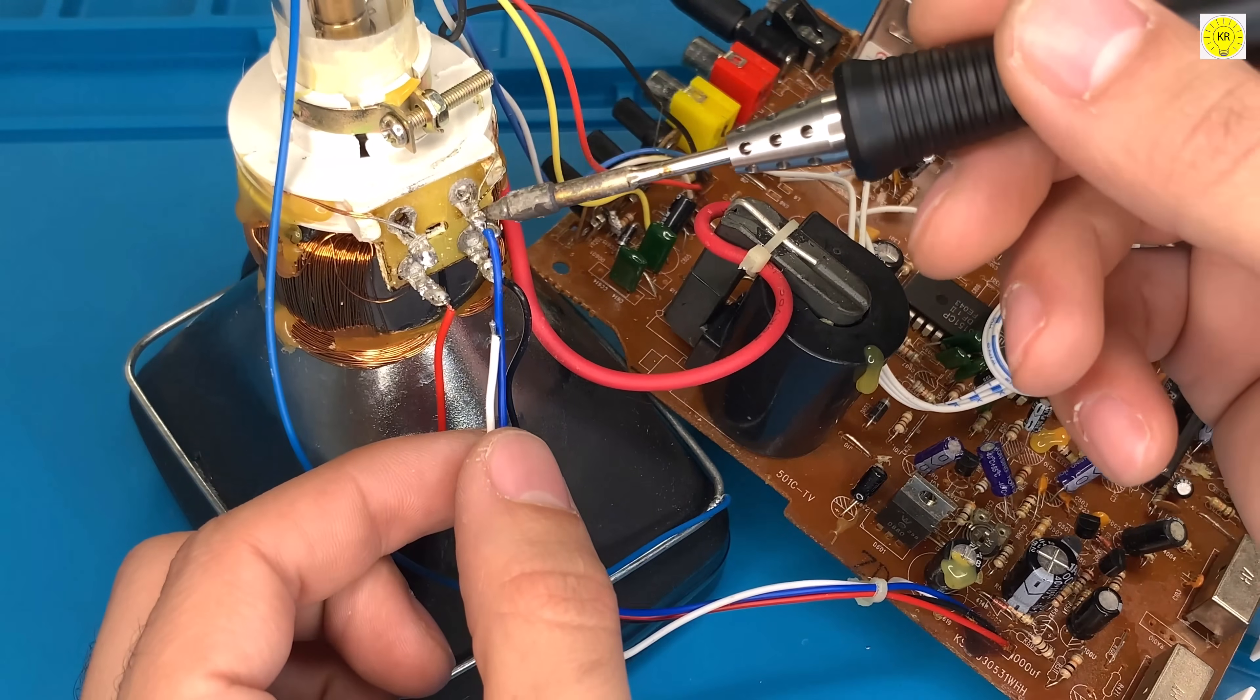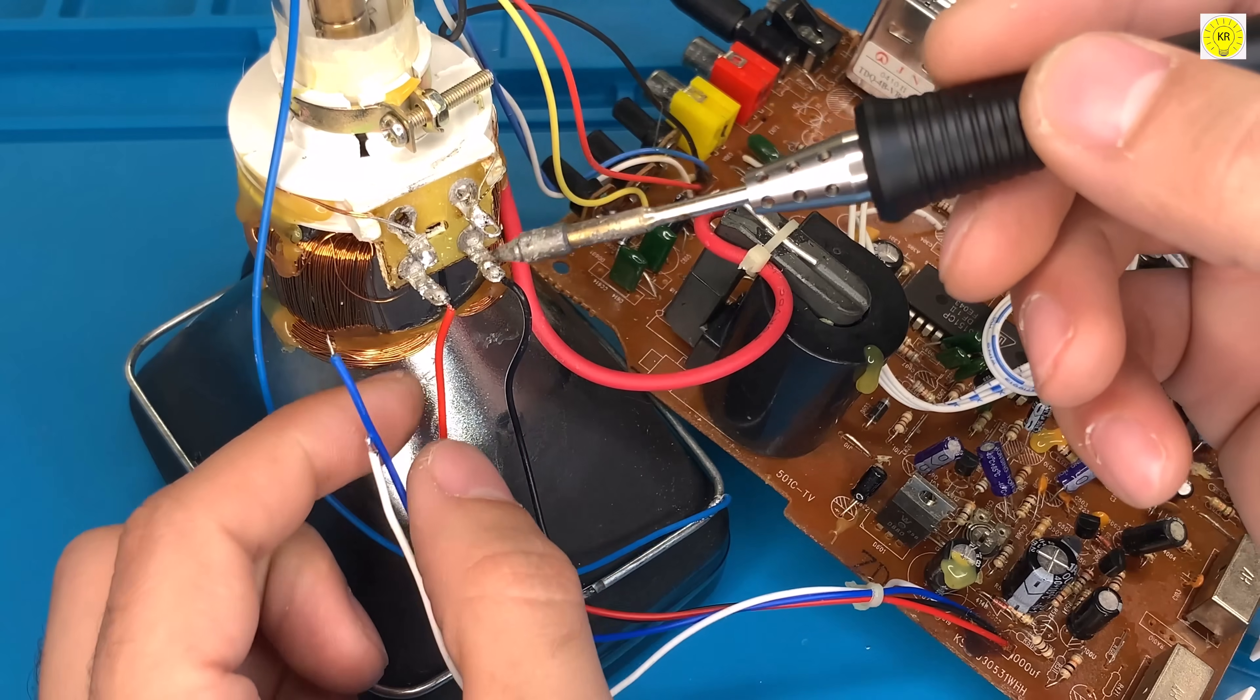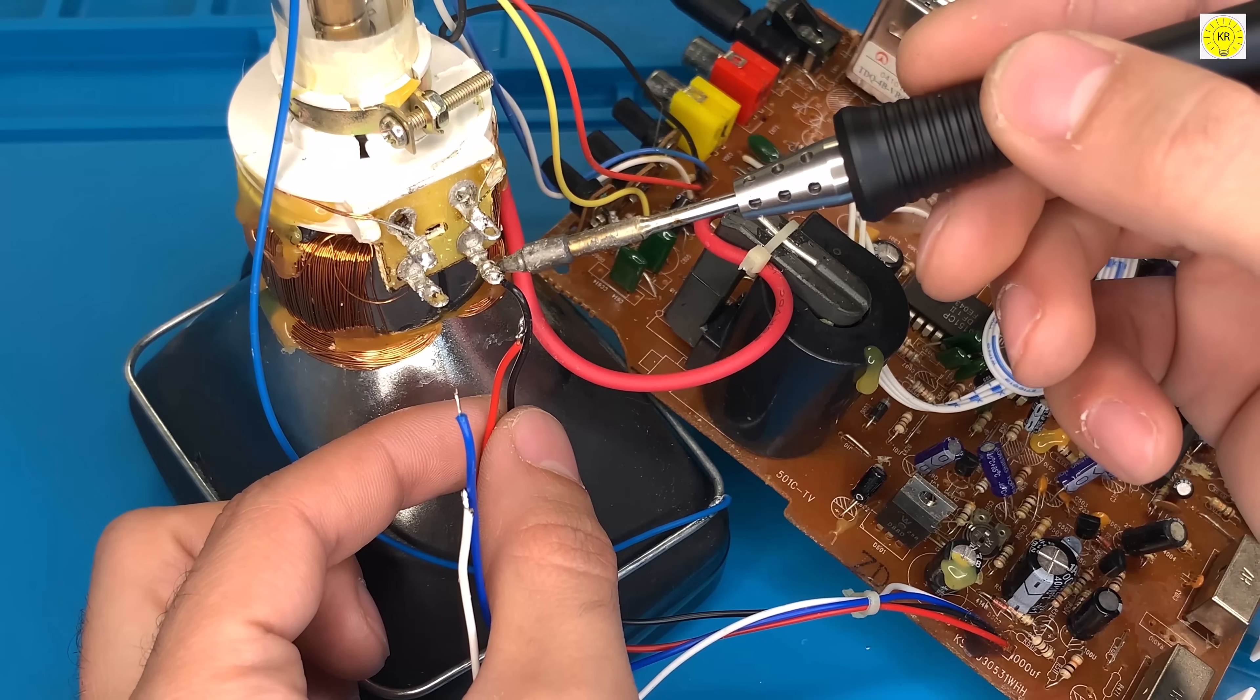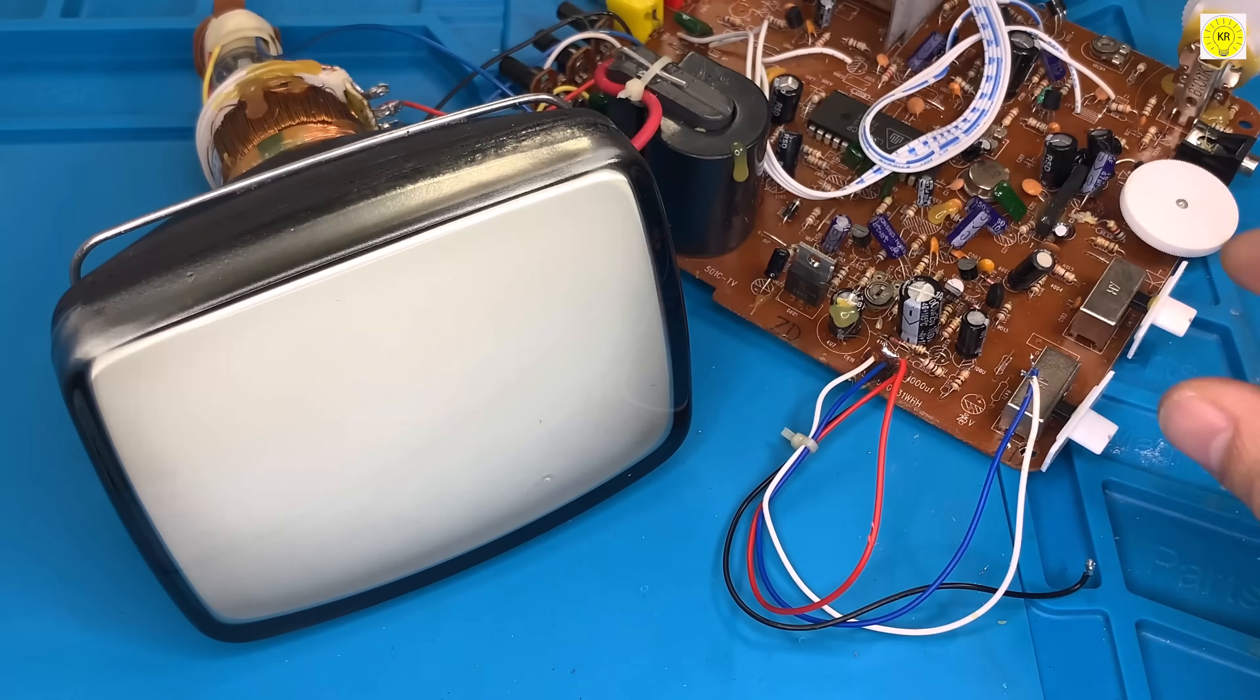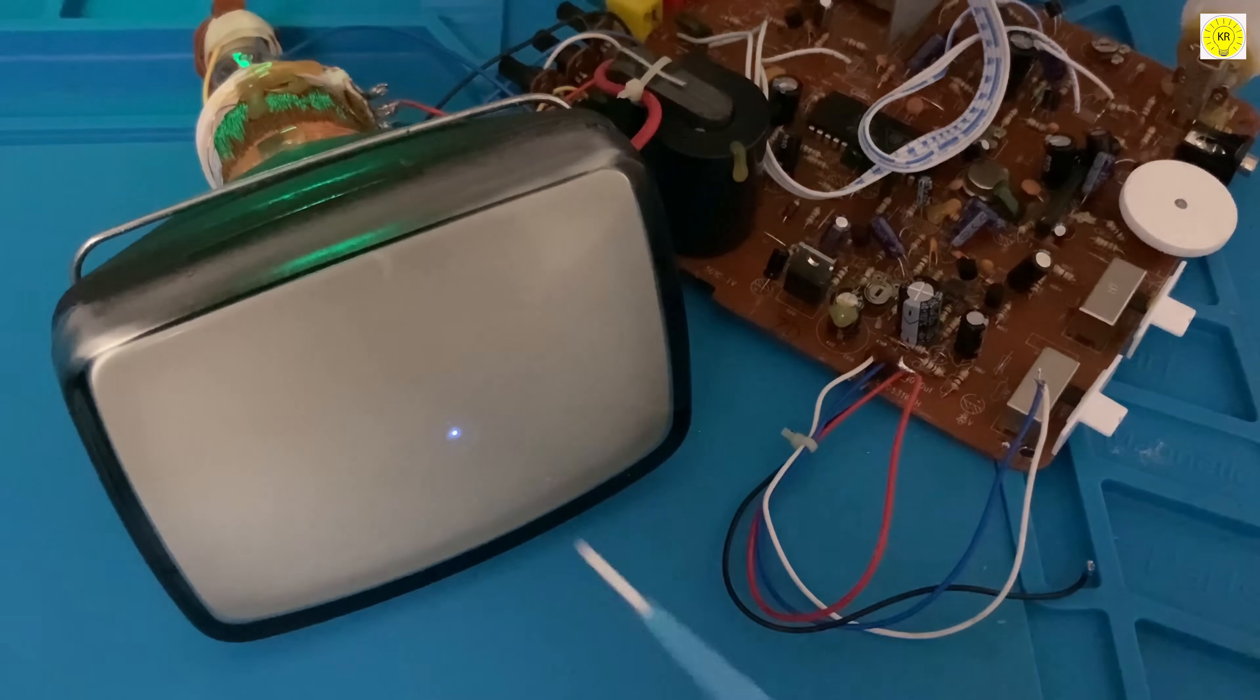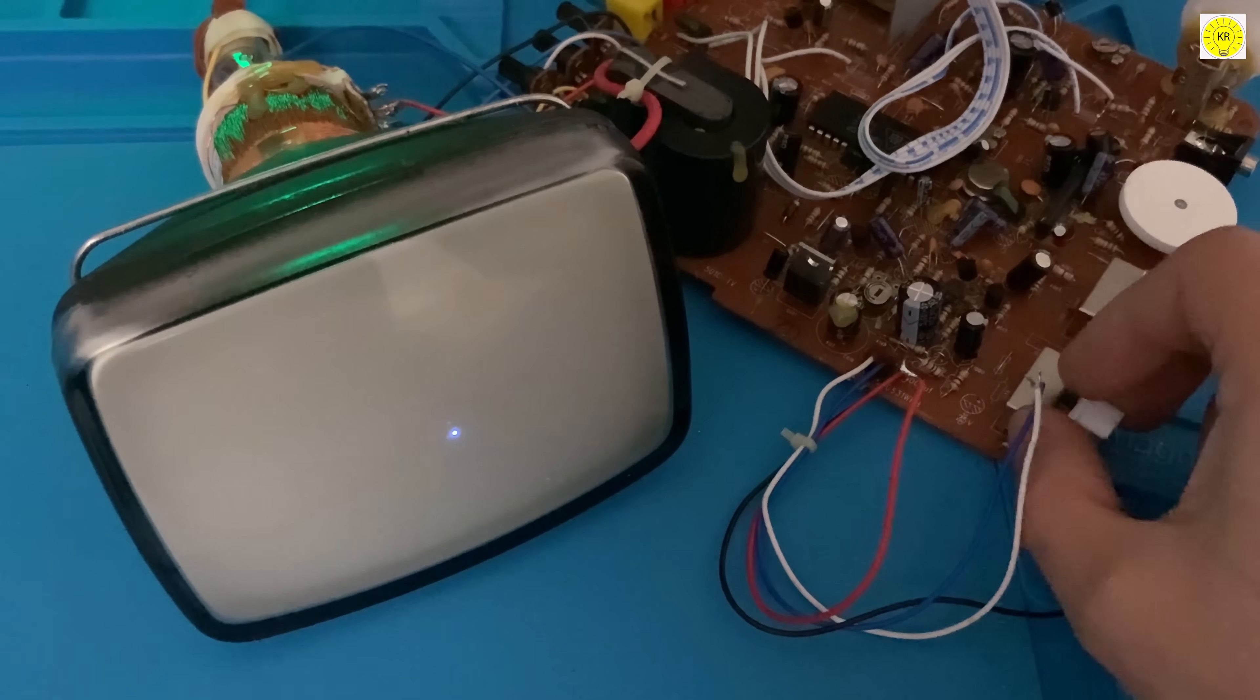First we remove all wires from the deflection coil to determine which coil controls horizontally and which controls electrons vertically. After removing the wires and turning on the TV, we notice that a white dot appears in the middle of the screen. This is the result of the direct flow of electrons and their concentration at the center point.